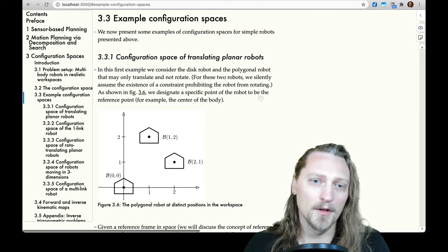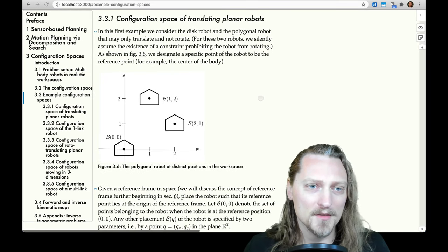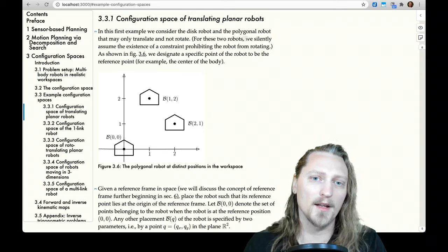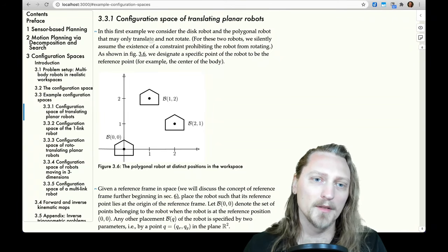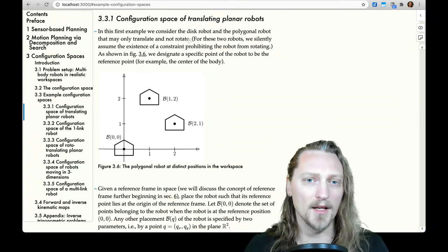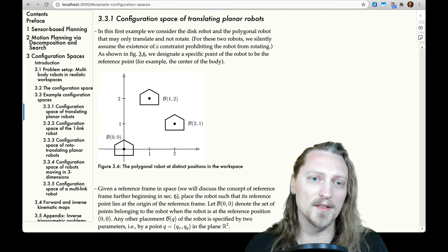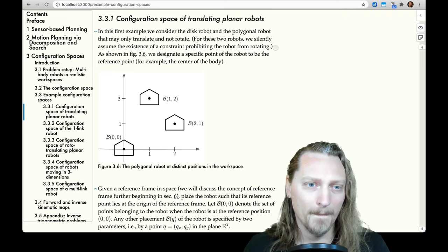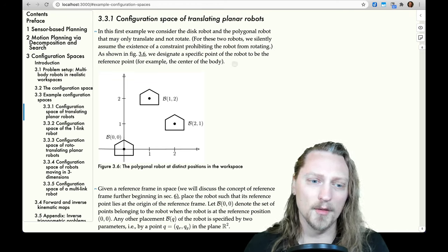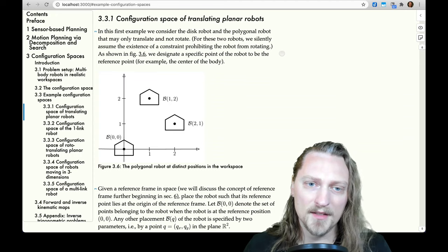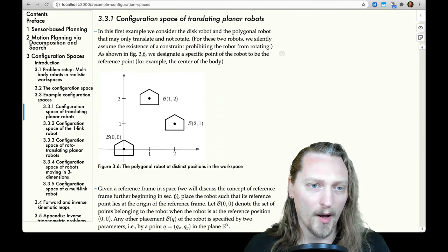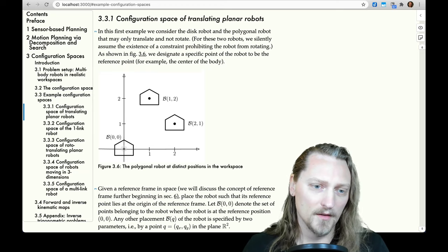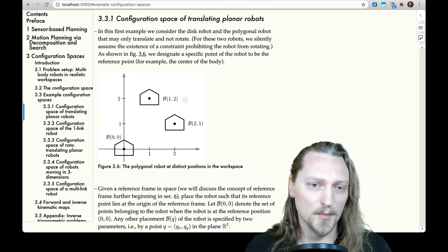Configuration space for translating planar robots. In this first example, we consider the disk robot and the polygonal robot that may only translate and not rotate. For these two robots, we silently assume the existence of a constraint prohibiting the robot from rotating. As shown in figure 3.6, we designate a specific point of the robot to be the reference point, for example, the center of the body, and we see it in different positions here.